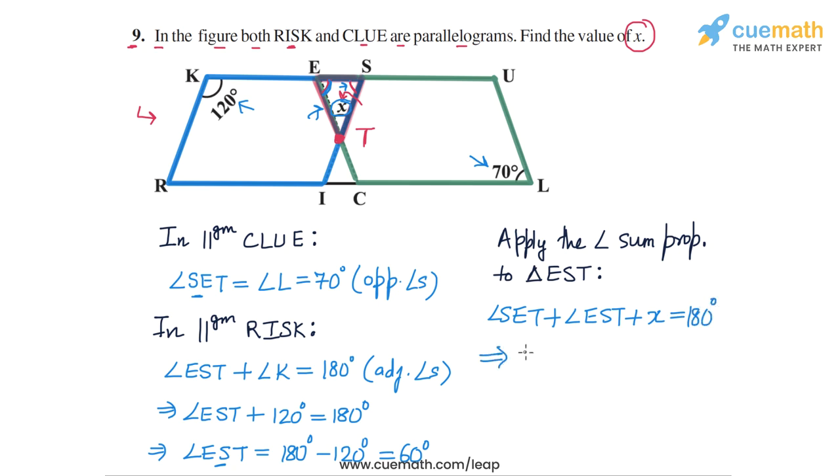So SET is 70 degrees, EST is 60 degrees. We get 70 plus 60 plus X equals 180 degrees, or 130 degrees plus X equals 180 degrees. This gives us the value of X: X equals 180 minus 130, and that's equal to 50 degrees.